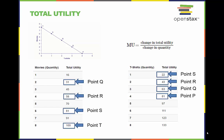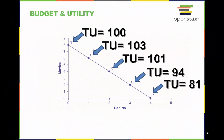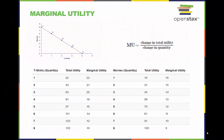The satisfaction received from consuming things is called utility. In the case of t-shirts and movies, we can see that Jose's total utility for each product increases as he consumes more of it. If we combine the total utilities of both t-shirts and movies, we can see that Jose's total combined utility for each point on the budget constraint is shown here.